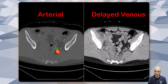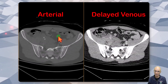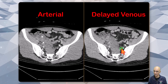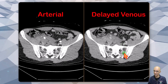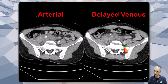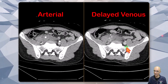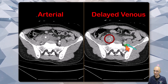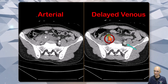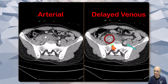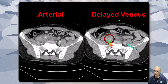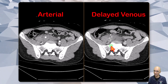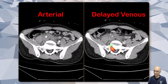On the bone window settings, there was no acute fracture identified in the pelvic bones. We also obtained delayed venous images. As I scroll through, you can see the normal left common iliac vein, but in the region of the right common iliac vein, no vein is identified. We see active contrast extravasation.